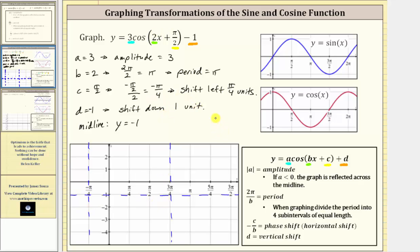Now we divide this into four equal subintervals, dividing this in half and then in half again. Because y equals negative one is the midline and the amplitude is positive three, if we go up three from y equals negative one, we will have a maximum function value of positive two. If we go down three from negative one, we will have a minimum function value of negative four.